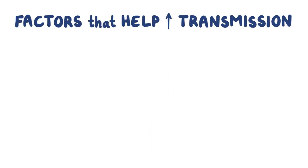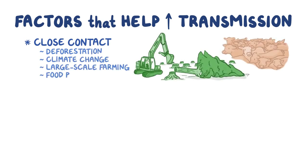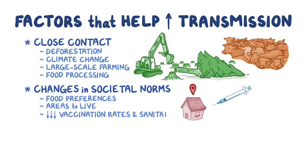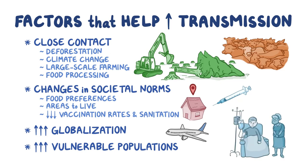There are a few factors that help increase their transmission. Some of the major ones include increased close contact between an infected animal and humans, which happens during deforestation, climate change, or large-scale farming and food processing; changes in societal norms like food preferences or areas to live; and decreases in vaccination rates or sanitation; or increased globalization that spreads local outbreaks rapidly through trade and travel; and even increased populations vulnerable to infections, like older folks and people with underlying conditions, which may make them immunosuppressed.